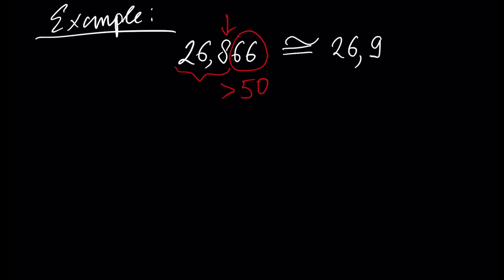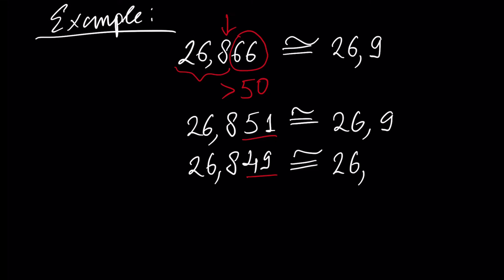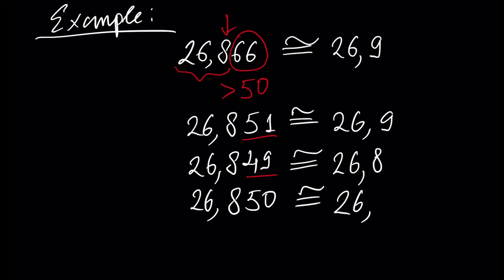If we had, for example, 26.851, it would be 26.9 because 51 is bigger than 50. But if we had 26.849, then 49 is less than 50, and this is approximately equal to 26.8. If we had 26.8 exactly, by this convention — the rule of rounding numbers — it would also be equal to 26.8.